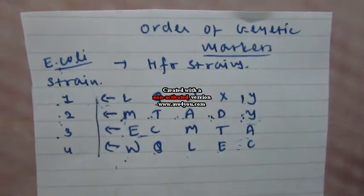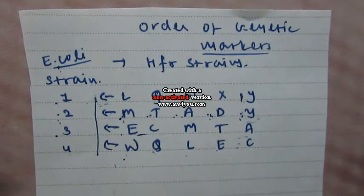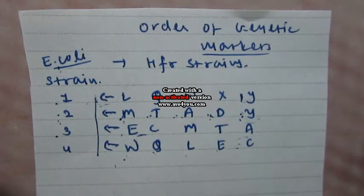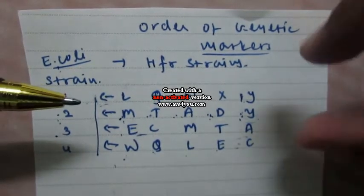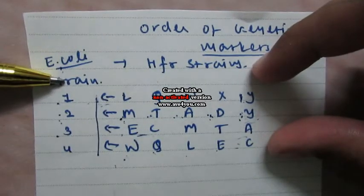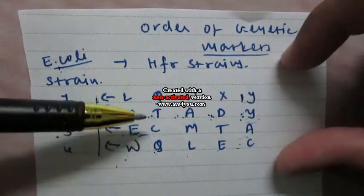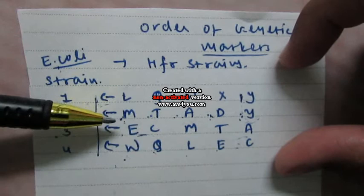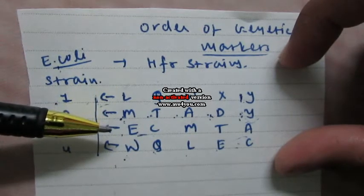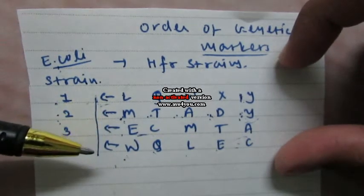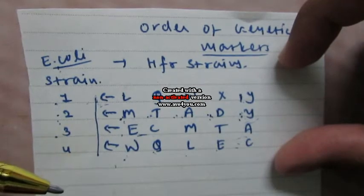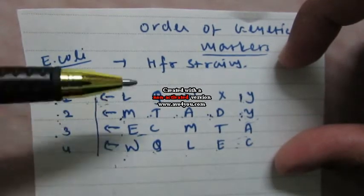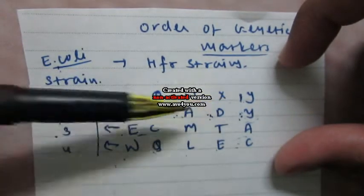Hello friends, today we will solve the problem related to order of genetic markers. For this, four HFR E. coli strains are given. The sequence of the strains are given, and generally orientation of each strain is given via the arrow key. If it is not mentioned, then generally orientation from the right side to the left side is taken as standard orientation and is denoted as an arrow key.